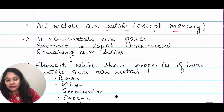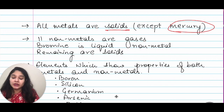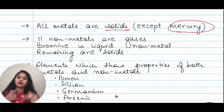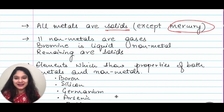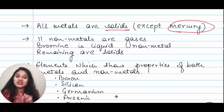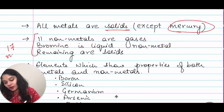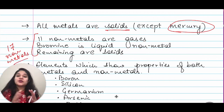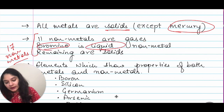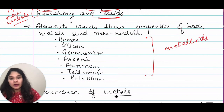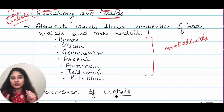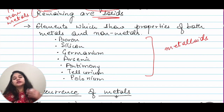All metals are solids except mercury — exceptions you have to remember. We are going to go at a faster pace since you have covered this in previous classes. We have 11 non-metals which are gases. Out of 17 total non-metals, 11 are gases, bromine is a liquid, and the remaining are solids. Elements which can show properties of both metals and non-metals are known as metalloids: boron, silicon, germanium, arsenic, antimony, tellurium, and polonium — all of these are metalloids which show properties from both sides.